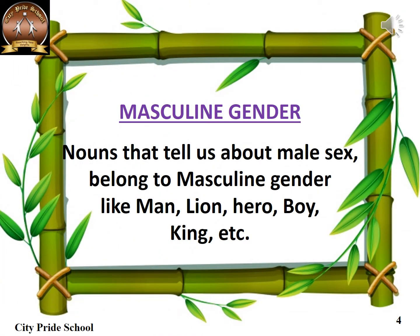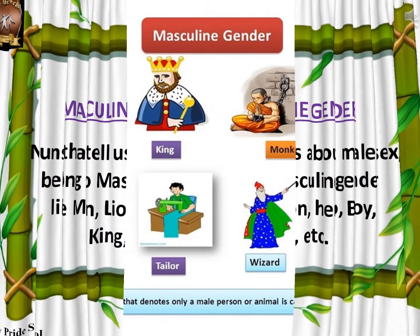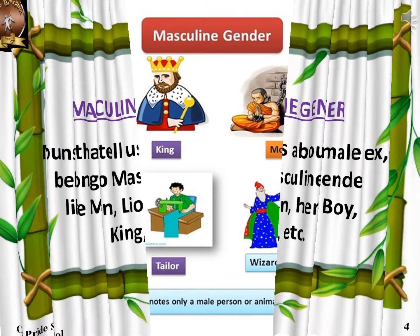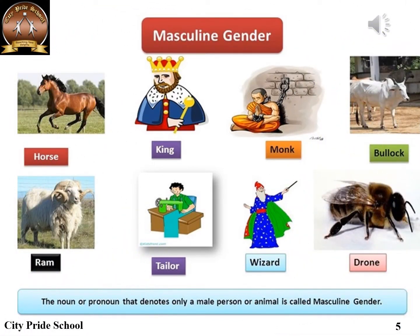Masculine gender: when nouns denote names of males, they are said to be in the masculine gender. Examples: man, lion, hero, boy, king. Few more examples of masculine gender: horse, king, monk, bullock, ram, tailor, wizard, and drone.